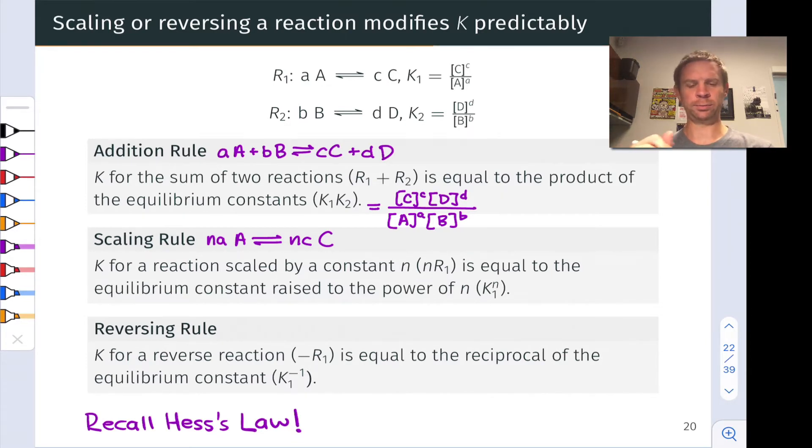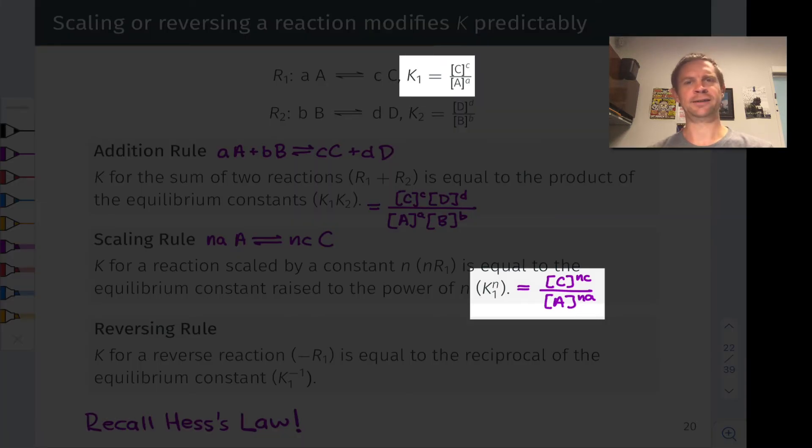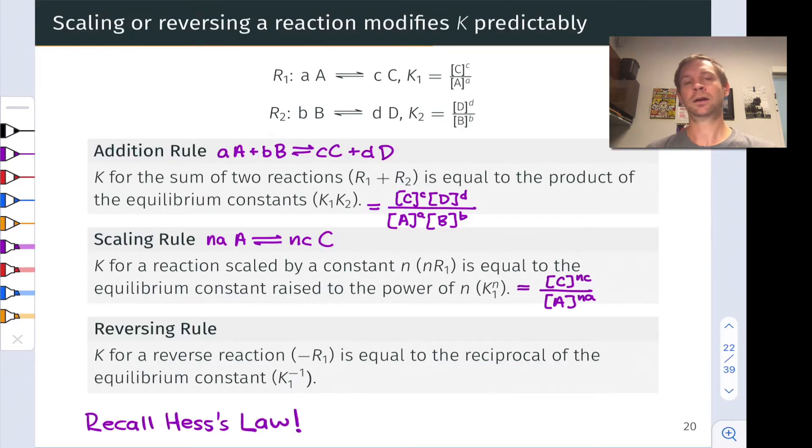And again, we could write the reaction quotient in the equilibrium expression for this reaction just by inspecting the form of the reaction. We would get what you see on the slide. But notice that this is K1 to the n power. The equilibrium constant for this scaled reaction is the equilibrium constant of the original reaction raised to the power of the scaling factor n. And this is the scaling rule.